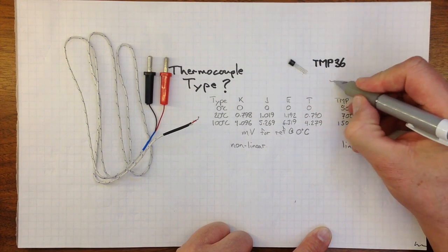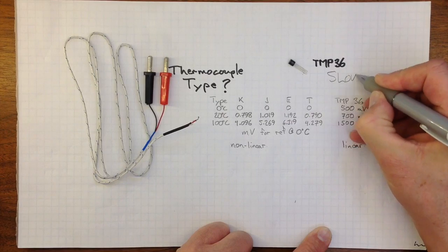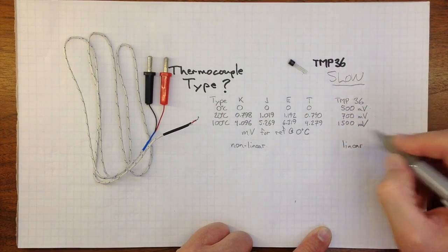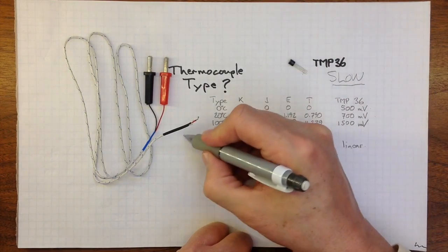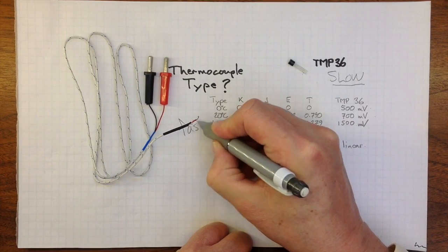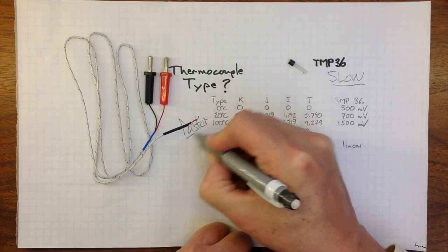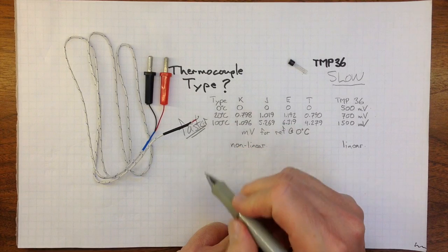So this TMP36, it'll be slow compared to this thermocouple, which will be fast, let's say faster, but still take some time.